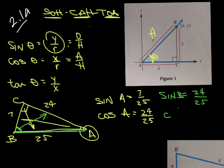If I wanted to find the tangent of B, the tangent of B is going to be opposite, which we already determined was 24, over the adjacent, which in this case is 7. It's the one that's connected to B.